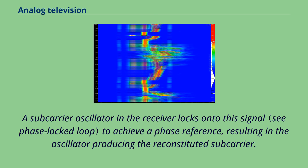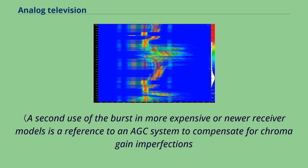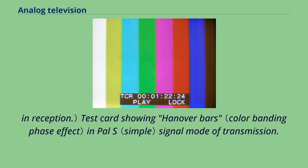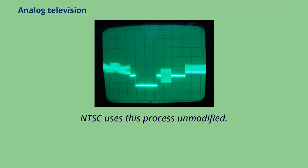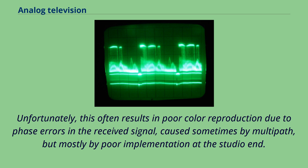NTSC uses this process unmodified. Unfortunately, this often results in poor color reproduction due to phase errors in the received signal, caused sometimes by multipath, but mostly by poor implementation at the studio end. With the advent of solid-state receivers, cable TV, and digital studio equipment for conversion to an over-the-air analog signal, these NTSC problems have been largely fixed.